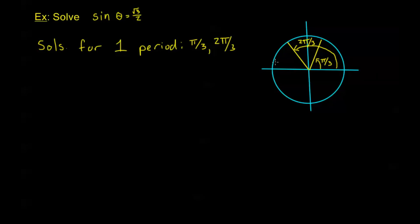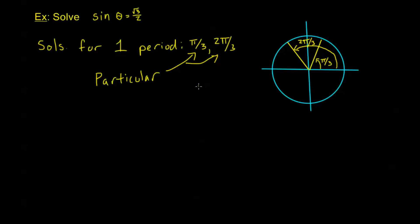These are all the solutions for one period — between 0 and 2 pi. In one period, sine of theta equals root 3 over 2 only at pi over 3 and 2 pi over 3. It's negative in quadrants 3 and 4, so we don't have to worry about those. We also sometimes call these particular solutions — pi over 3 and 2 pi over 3 are particular solutions because they are solutions, but not all of the solutions.